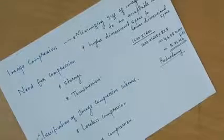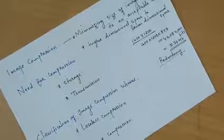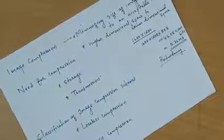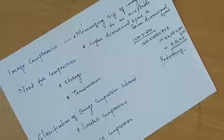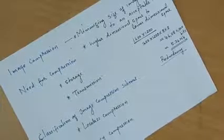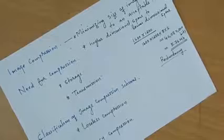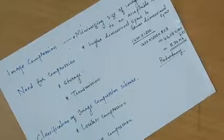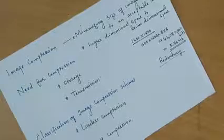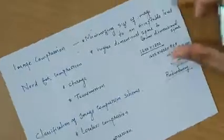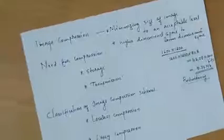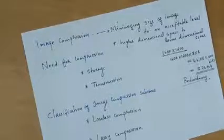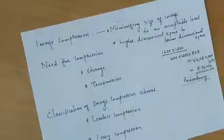For transmission, we need a channel with maximum bandwidth — we need more bandwidth channels, which is cost effective. Due to cost and implementation difficulties, we need to apply image compression because these redundant pieces of information can be reduced.